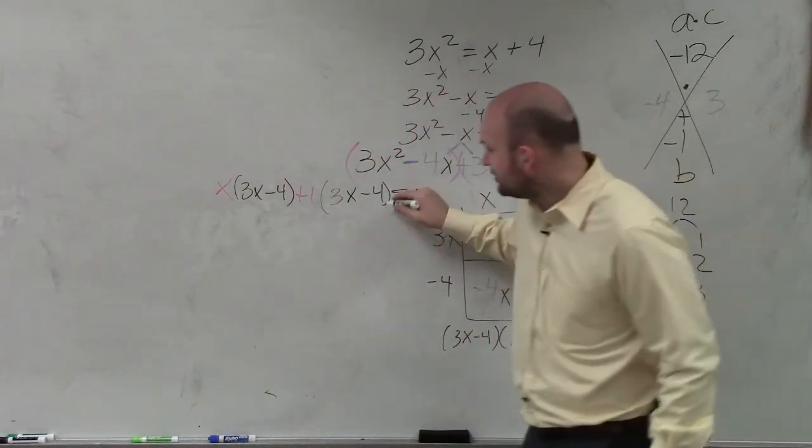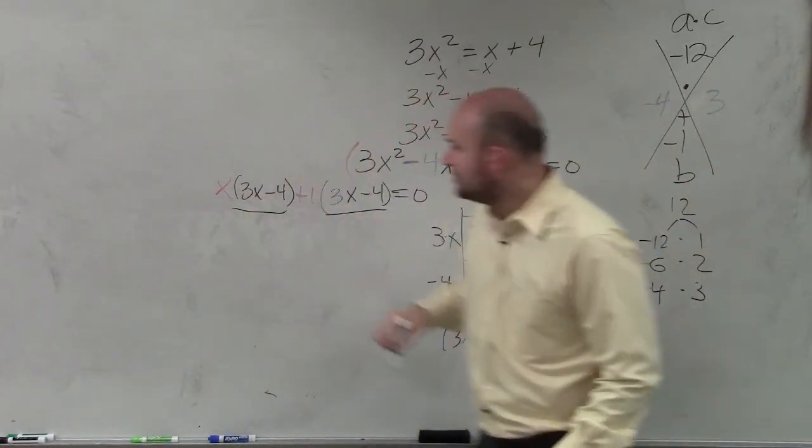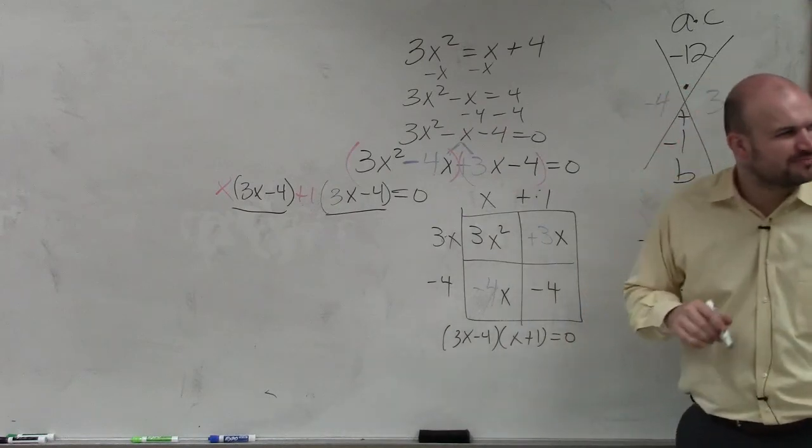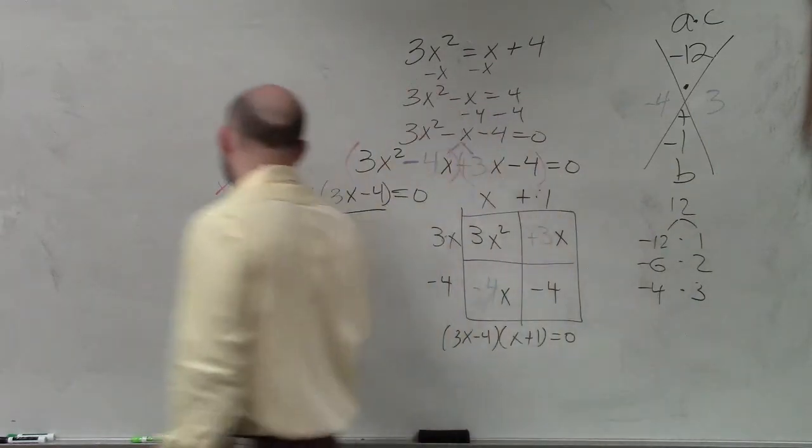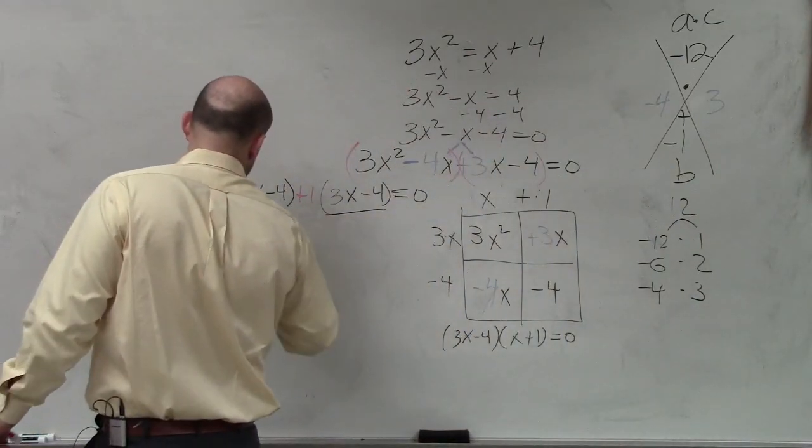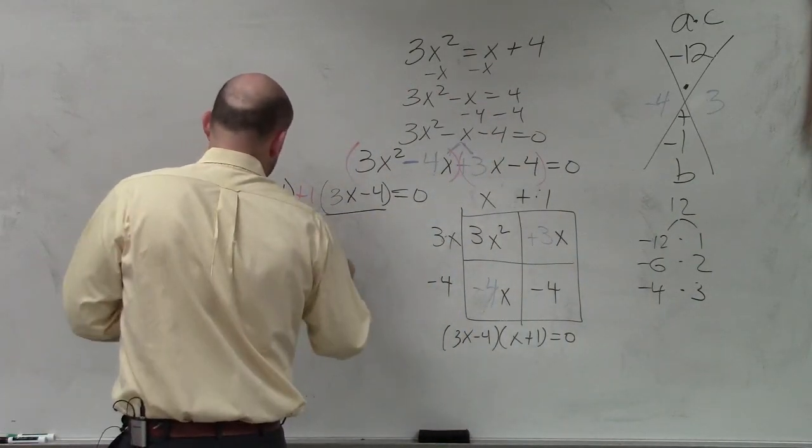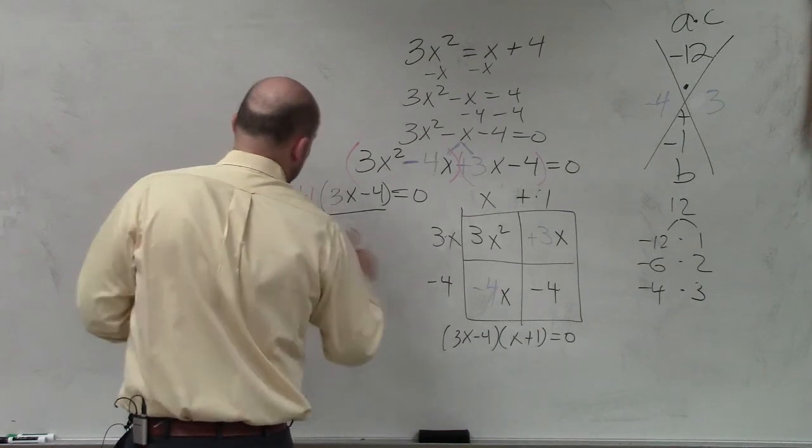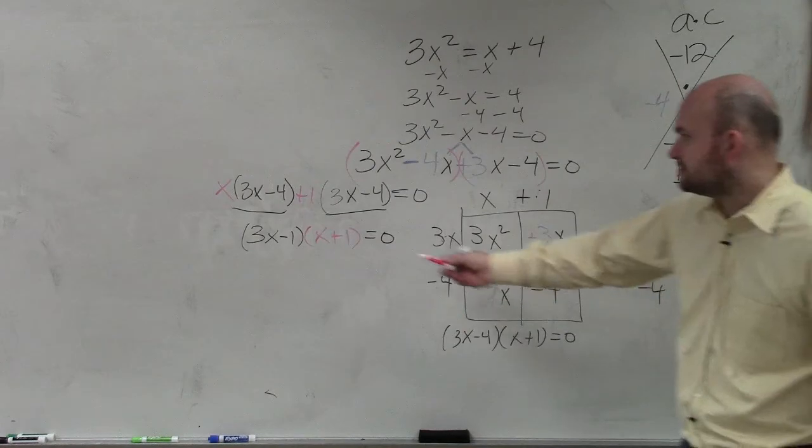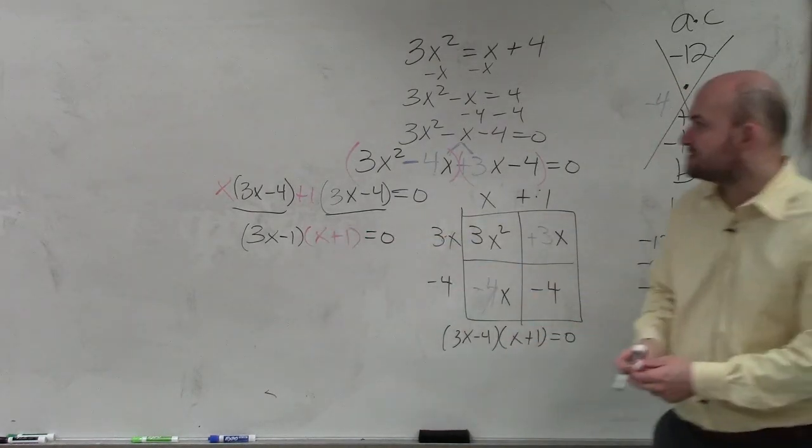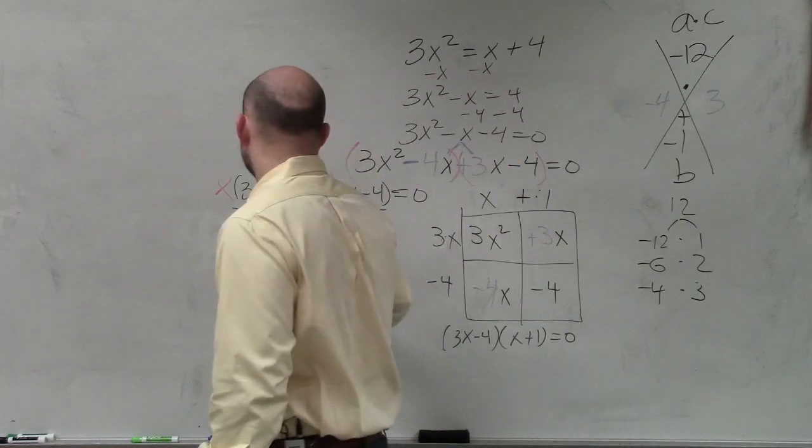Now, if you guys look at these, now what do they have in common? What do they have in common? What expression do they have in common? What do both of these terms have in common? 3x - 1. 3x - 1. So you factor that out. And you're left with an x + 1. x + 1. Oh, 3x - 4. Sorry.